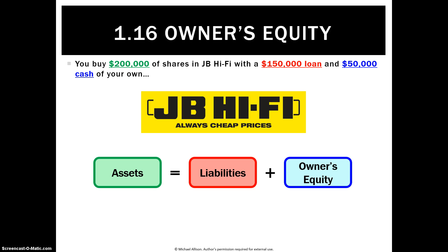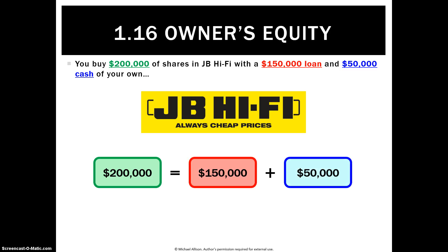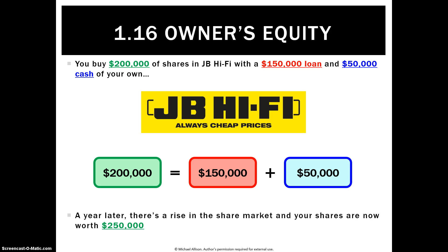Let's use an example where asset values do change, which is more realistic. Say you bought $200,000 of shares in JB HiFi using a $150,000 loan and $50,000 of your own money. So you've got $200,000 of assets, $150,000 liabilities, and $50,000 owner's equity. In the real world, things go up and down in value. If your shares went up to $250,000, you still owe $150,000 to the bank, so your owner's equity increases — that's your profits. Revenue and profits increase owner's equity.